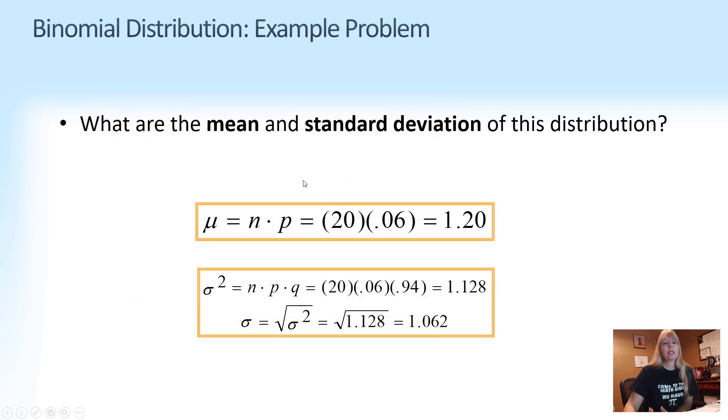How can I find the mean? Take the sample size times my probability of being unemployed. How do I find the variance and the standard deviation? The sample size, probability unemployed, probability employed.